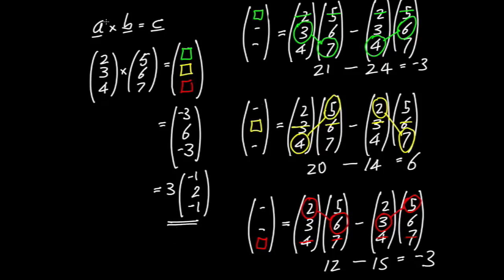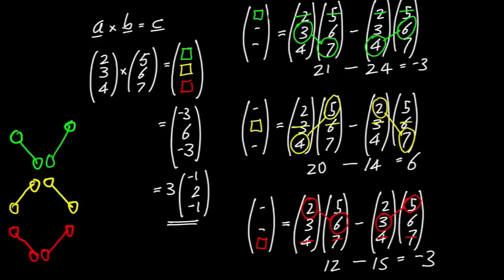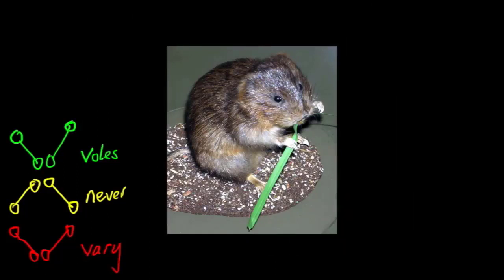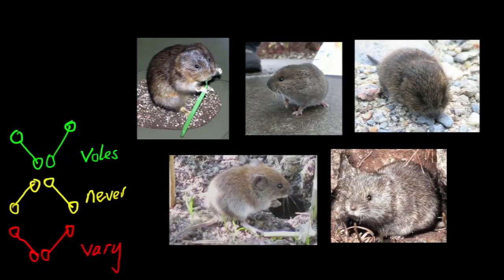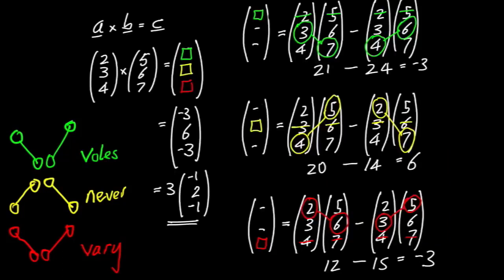Notice the pattern for computing the cross product: for the first component it's the falling diagonal minus the rising diagonal (a V shape), for the second it's the rising minus the falling (an N shape), and for the third it's back to falling minus rising (V again). I remember this as 'VNV' — the pattern alternates. The falling diagonal goes from high to low; the rising diagonal goes from low to high.